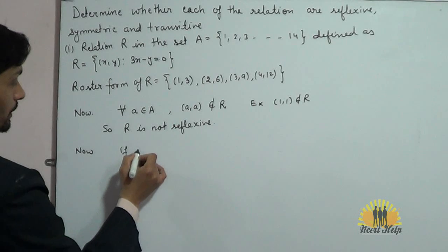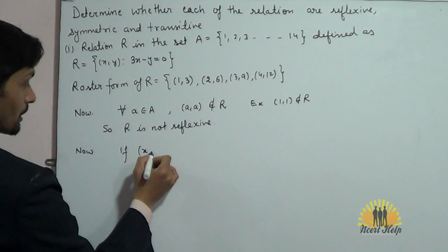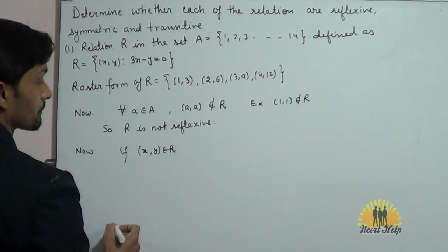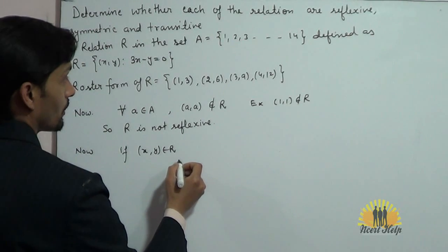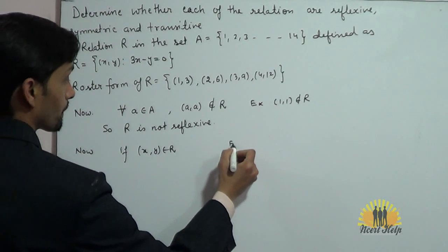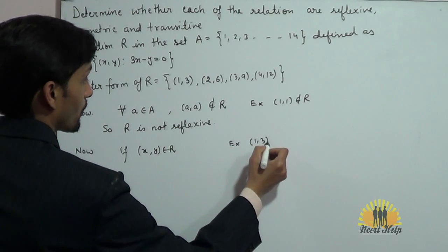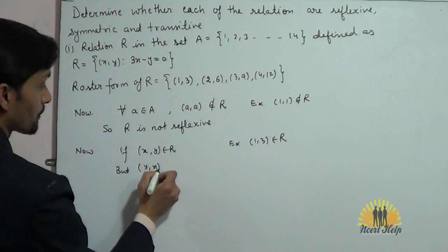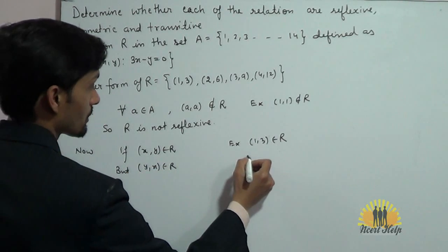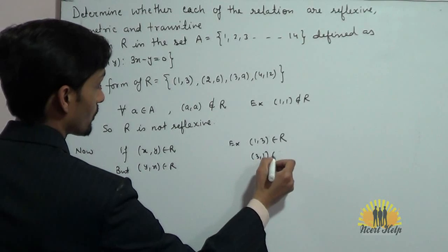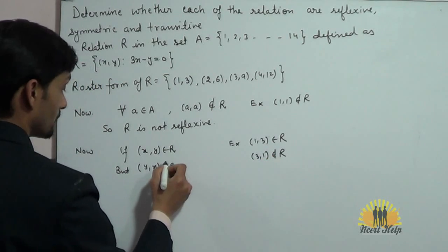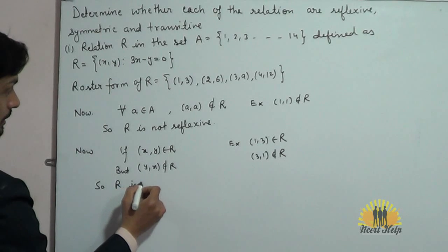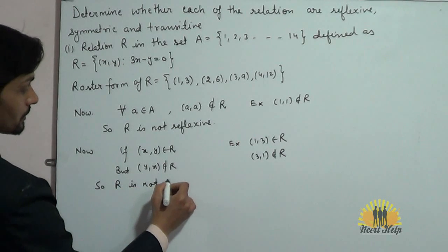Now, if (x, y) belongs to R, for example (1, 3) belongs to R, but we don't have (y, x) belongs to R, because (3, 1) is not contained in R. So the relation R is not symmetric.